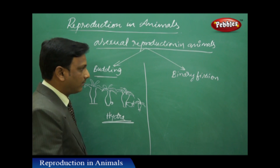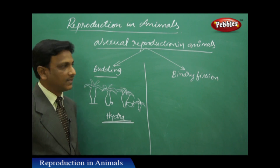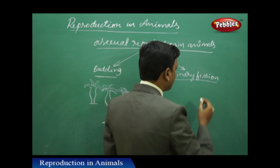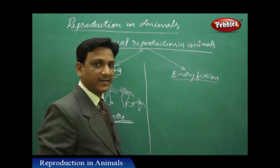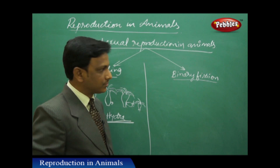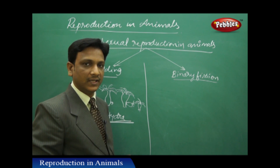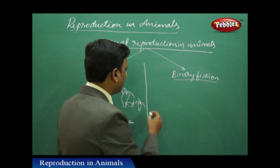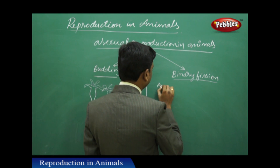This is called budding, and the example is hydra — budding is observed in hydra. Now let us talk about the second type of asexual reproduction in animals: binary fission. Binary fission is generally observed in unicellular animals like amoeba.